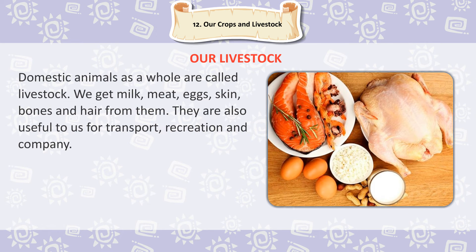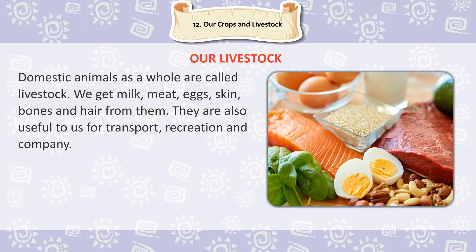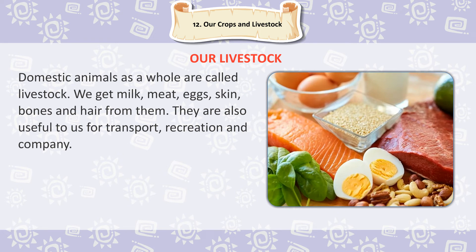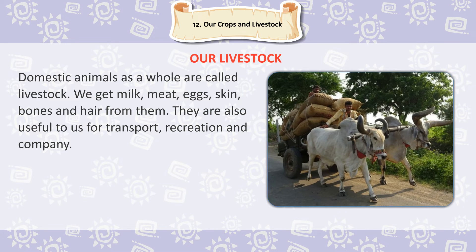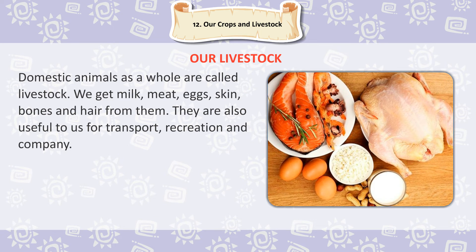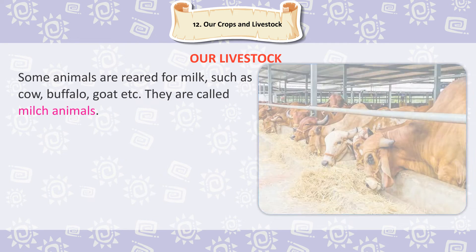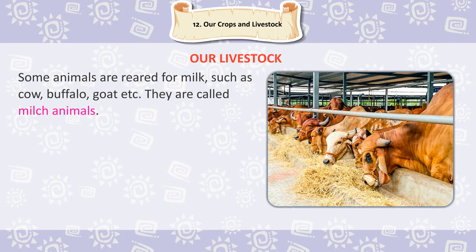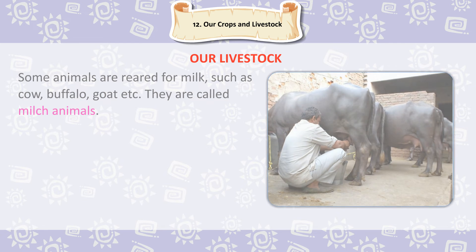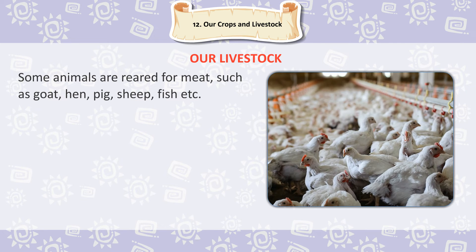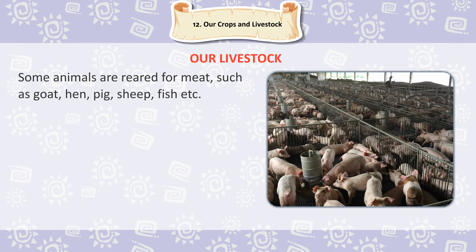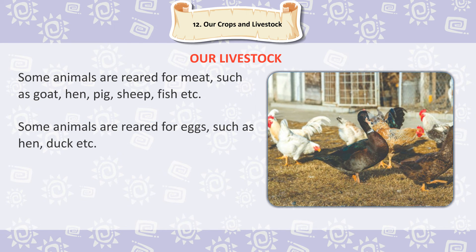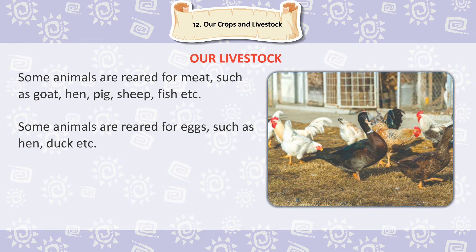Our Livestock. Domestic animals as a whole are called livestock. We get milk, meat, eggs, skin, bones and hair from them. They are also useful for transport, recreation and company. Some animals are reared for milk, such as cow, buffalo and goat — these are called milch animals. Some animals are reared for meat, such as goat, hen, pig, sheep and fish. Some animals are reared for eggs, such as hen and duck.